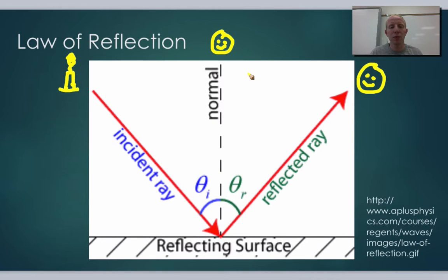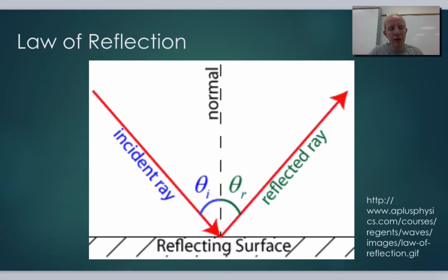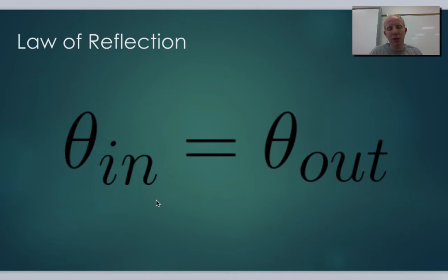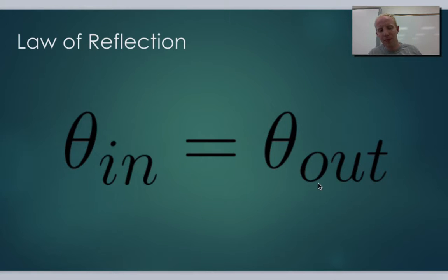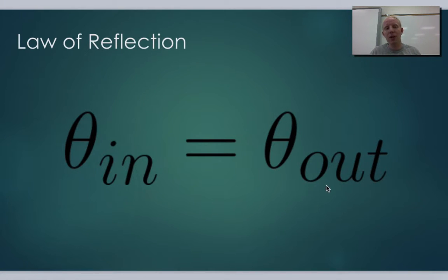The more angle you have, the more of this angle you'll see. Simply put, whatever the angle of incidence is will be equal to the angle that it goes out — it reflects perfectly. This also works for sound: whatever direction sound is heading, it's going to match that angle and go out as it reflects.